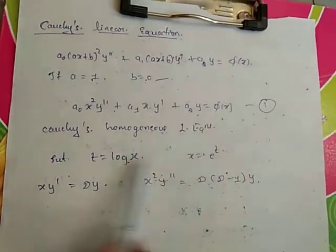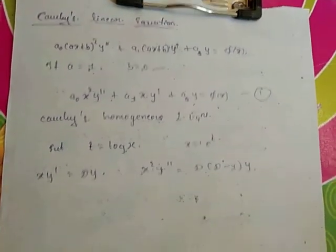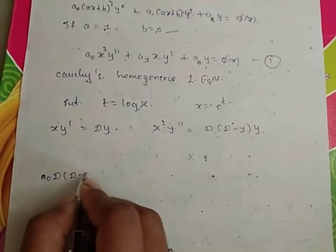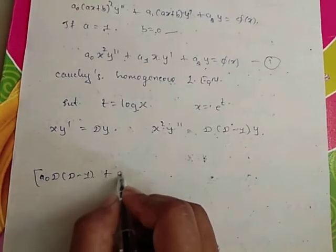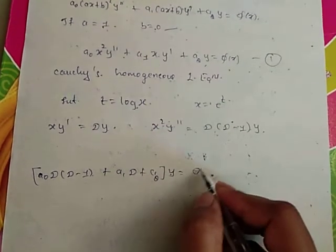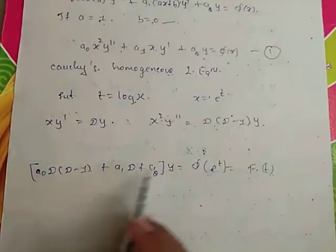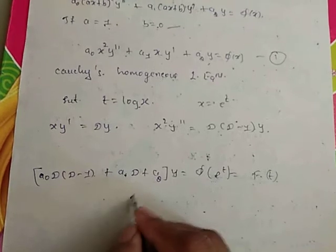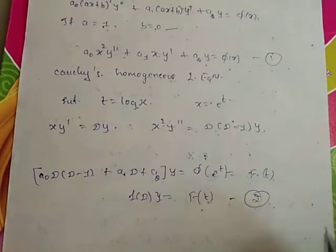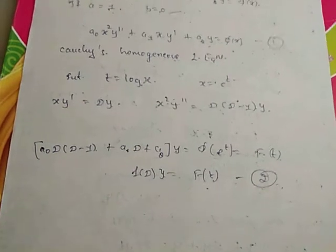After substitution, equation (1) reduces to a standard form — that is, a differential equation with constant coefficients: A₀·D(D−1) + A₁·D + A₂ of Y = φ(e^T), which is a function of T. This is written as F(D)·Y = function of T.